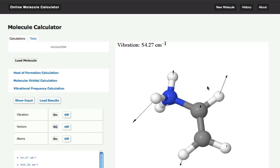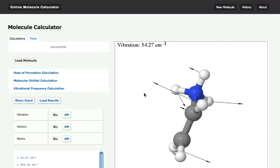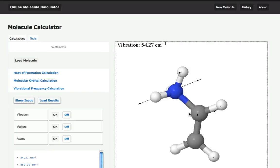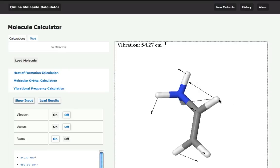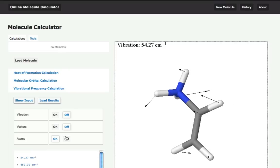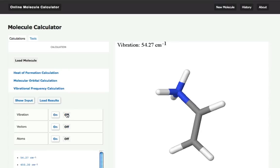I can also add vectors here, and I can also turn off the atoms to get a more simplified view of the molecule. Let me turn that off.